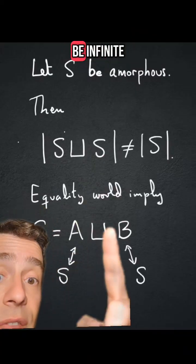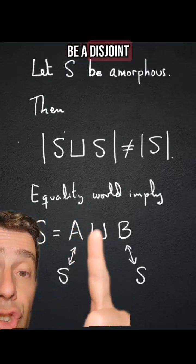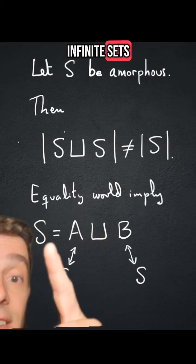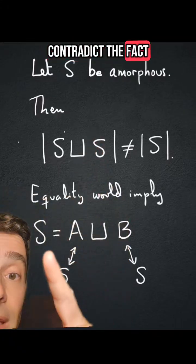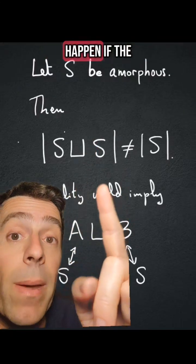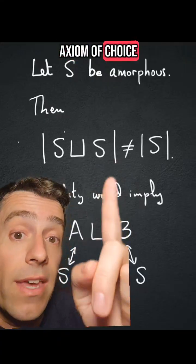So this would be infinite, that would be infinite, that would be a disjoint union of two infinite sets, and that would contradict the fact that S is amorphous. So this can happen if the axiom of choice is false.